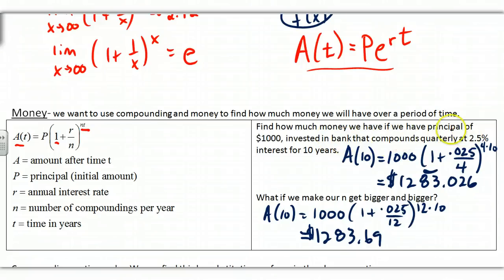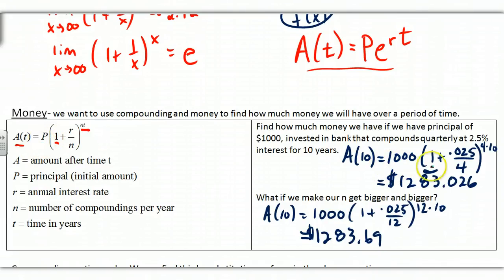Example: find how much money we have with a principal of $1000, compounded quarterly at 2.5% interest for 10 years. 2.5% is actually quite high right now. A(10) equals $1000 times (1 + 0.025/4)^(4×10). I take 0.025, divide by 4 because it's compounded quarterly, and raise to the power of 40 — four quarters times 10 years — and crank that out.